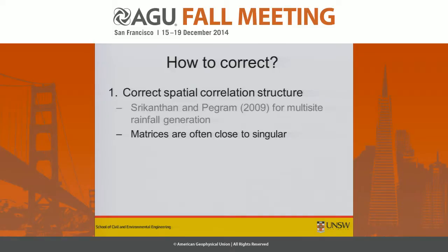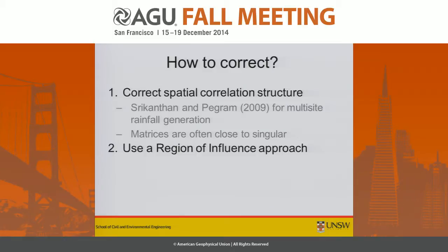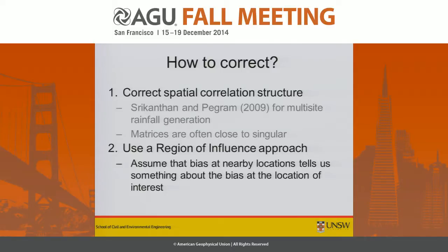So it was back to the drawing board. What I came up with was something borrowing from ideas in extreme floods and extreme rainfalls — a region of influence — where we assume that the bias at a nearby location tells us something about the bias at our location of interest. This is commonly used in flood frequency analysis or IDF curves, where we assume a common distribution to extreme values. Here, instead, I want to use a common distribution to the biases.